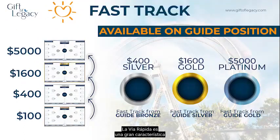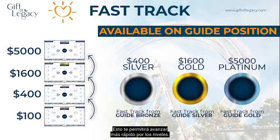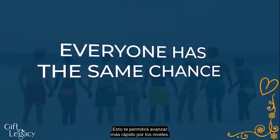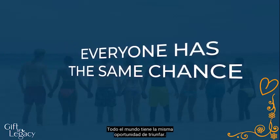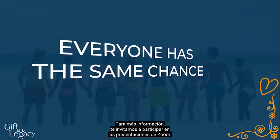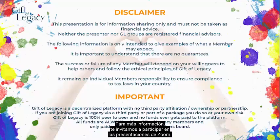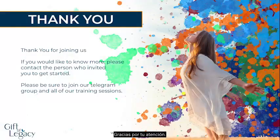Gift of Legacy also has a fast track system. Fast tracking is a great feature that allows you to unlock your next level once you reach the guide position on your first cycle. Fast tracking is also available on each clone position, allowing you to move through the levels faster. Remember, no position stays at the top — everyone has the same chance to succeed. For more information, please be sure to join our Zoom presentations. Please note: this overview should not be taken as financial advice and is for information purposes only. Thank you for watching.